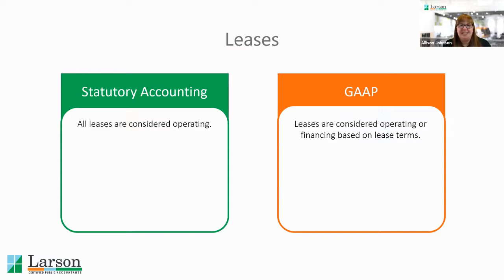Moving on to leases, there's a pretty significant difference here. Statutory accounting maybe makes it a little bit simpler than we see for GAAP. For statutory accounting, all leases are considered operating, so any lease expense runs through the income statement, and that's the end of the guidance. For GAAP, leases are considered to either be operating or financing, and those standards are changing in the next couple of years. Be aware that this has the potential to be a pretty significant adjustment or difference if you're looking at the financial statements.